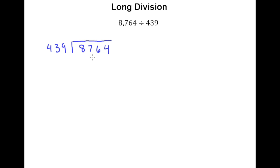So we need to figure out how many times 439 goes into 876. One quick way of getting an initial guess is to chop off the same number of digits in each number. So I'm going to put a squiggly mark underneath the ones digit in each number we're considering, and look at 43 and 87 — how many times does 43 go into 87? If that's still hard, you could even say how many times does 4 go into 8? You may not get the correct guess but it'll get you in the neighborhood, pretty much within 1.